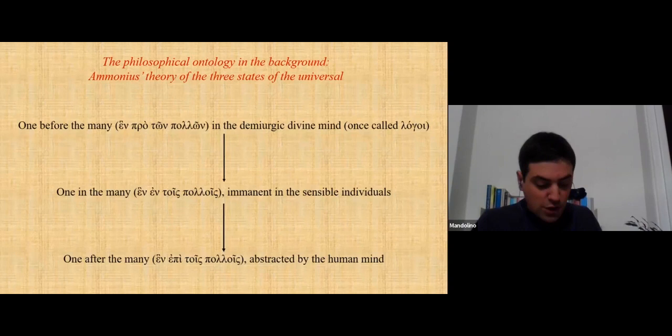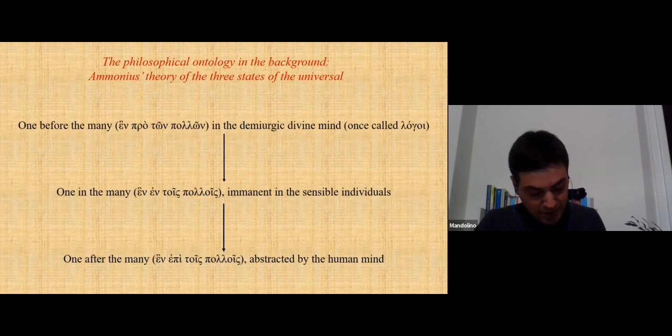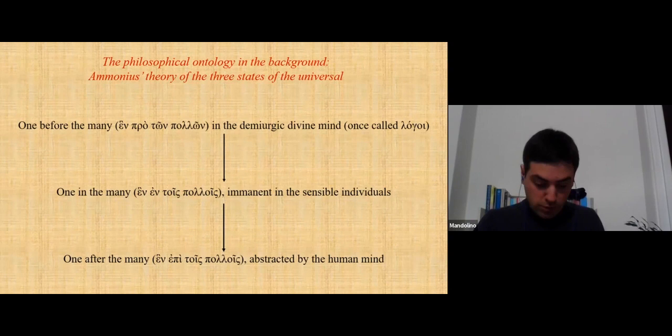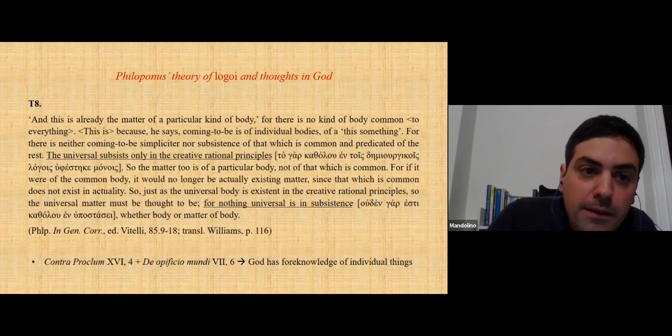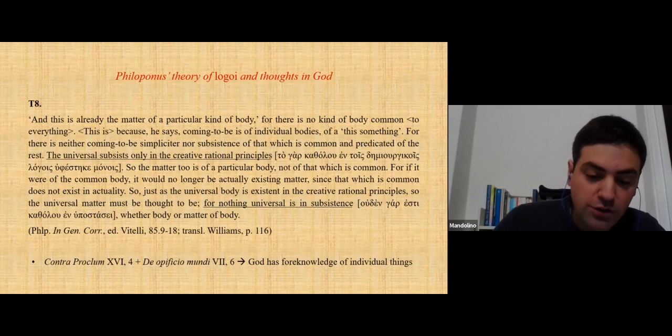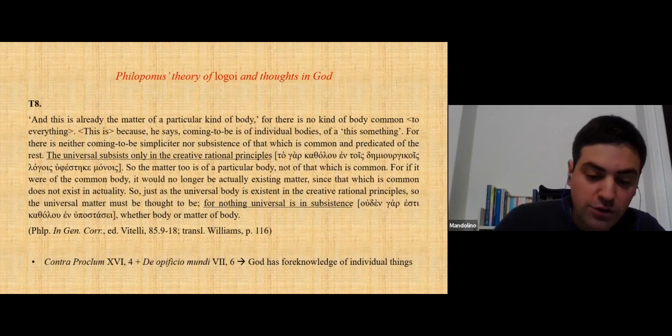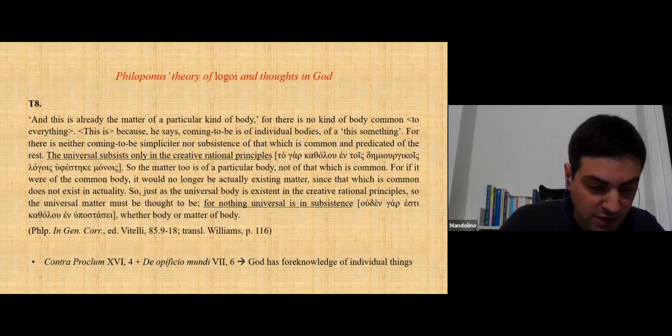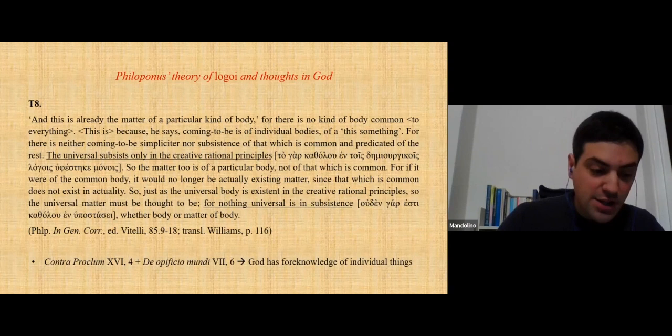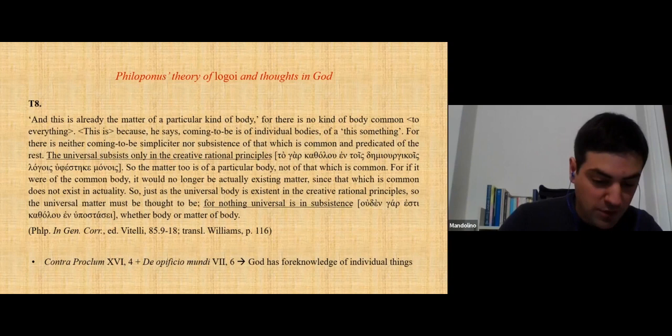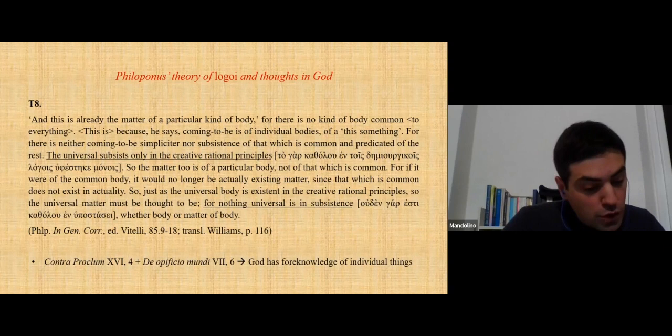Ammonius' theory of the three states of the universal assumes a fundamental agreement between the views of Plato and Aristotle, thus allowing for the existence of paradigmatic forms before the many, located in the divine demiurgic mind and investigated by the theologian. Ammonius also calls these forms in the divine mind logoi. Then, according to Ammonius, we have forms in the many, which are immanent in the individuals and investigated by the natural philosopher. And finally, forms after the many, abstracted by the human mind and investigated by the logician or the dialectician. And the forms before the many are compared to the seal of a ring, repeatedly impressed on several pieces of wax and subsequently recognized by the observers as impressions originating from the same model.